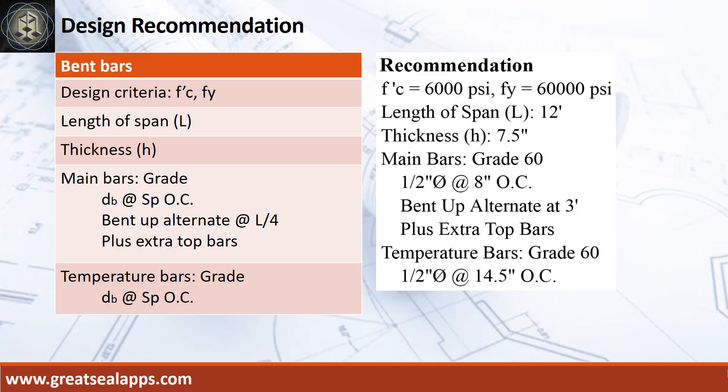Design recommendations are as follows. fc' equals 6,000 PSI. fy equals 60,000 PSI. Length of span is 12 feet. Thickness is 7.5 inches. Main bars of grade 60: half-inch diameter bar at 8 inches on center, bend up alternate at 3 feet, plus extra top bars. Temperature bars of grade 60: half-inch diameter bar at 14.5 inches on center.